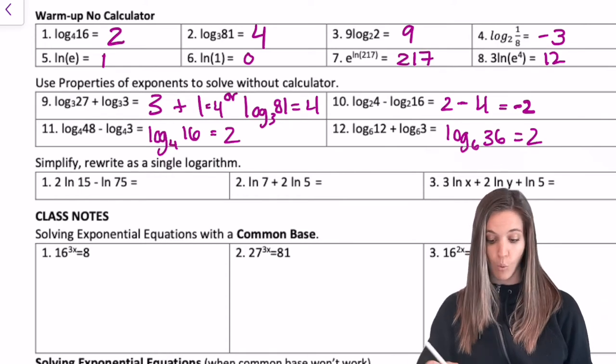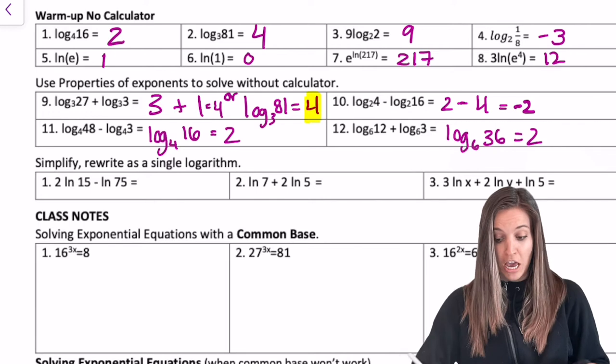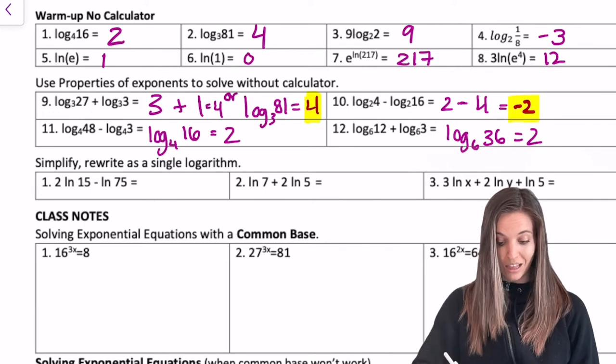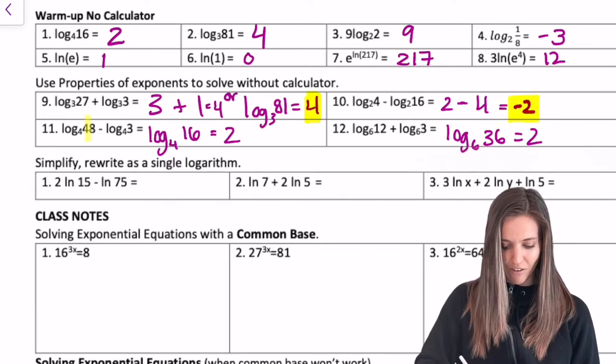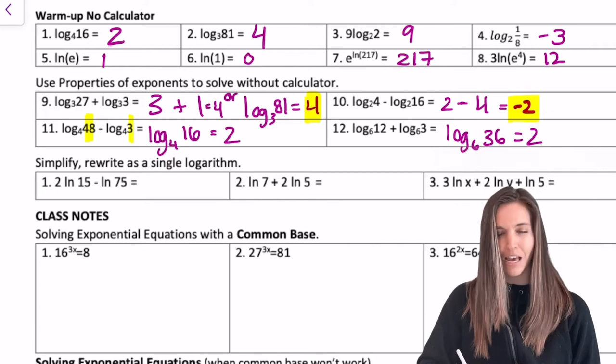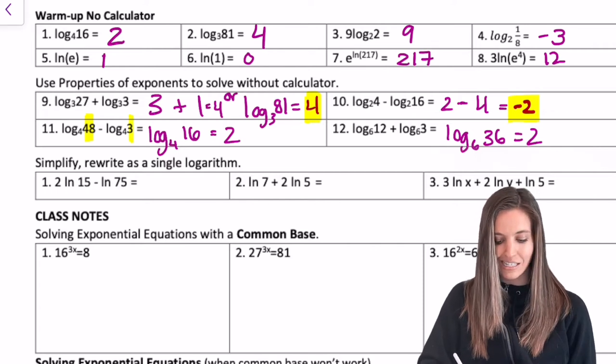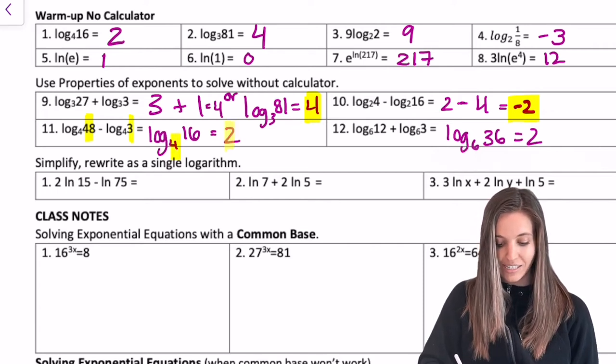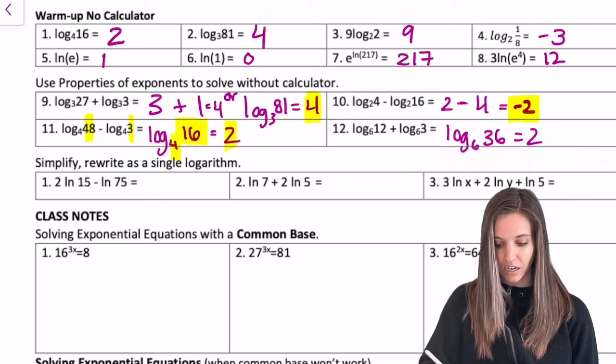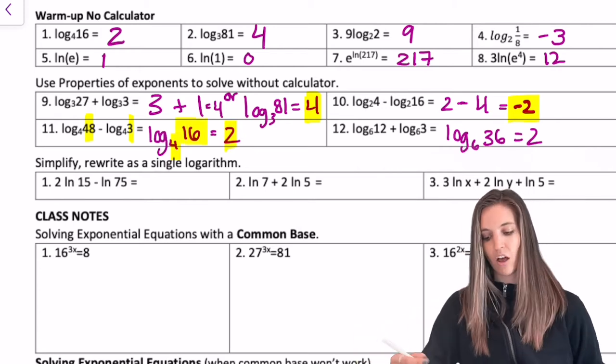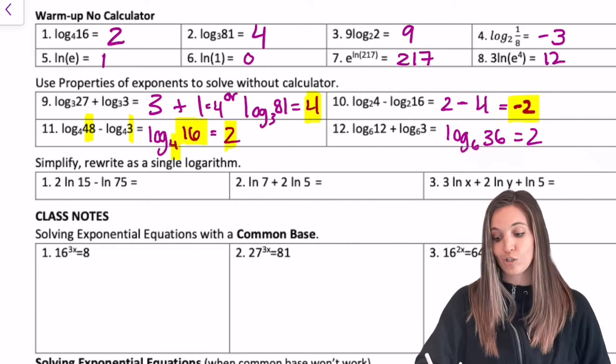For number 9, I got 4. Number 10, I got negative 2. For 11, take a really close look at that. I got 48 divided by 3 inside my log base 4. Well, that's 16. And then 4 to the second power, that's 16. Cool. And then the last one I got log base 6 of 36, which is 2.